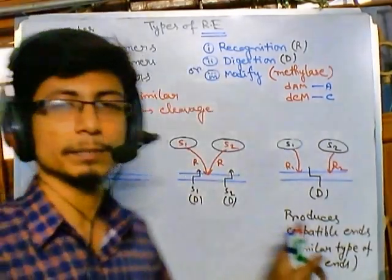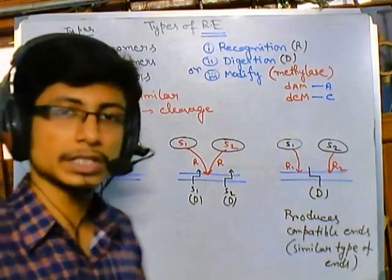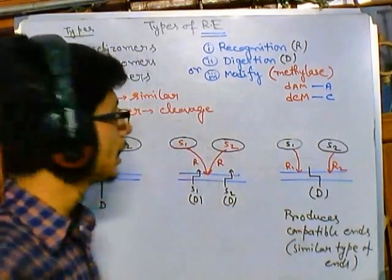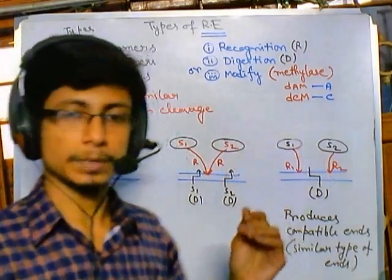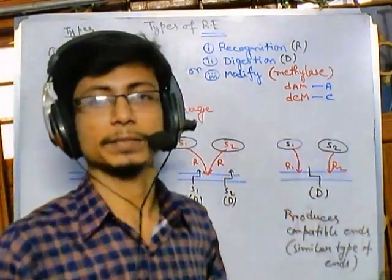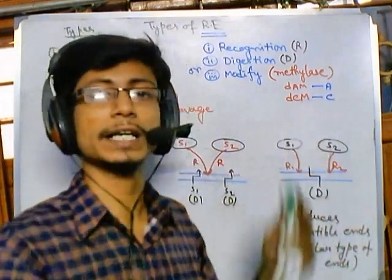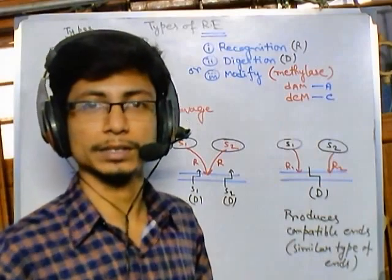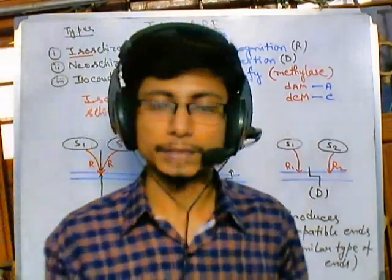Knowing these things is important because if we treat a particular DNA sequence with isochodomers, we can generate compatible ends by treating the DNA sequence with two different enzymes, which increases the versatility of use of restriction enzymes in molecular biology. So that's it — I hope that's helpful, thank you.